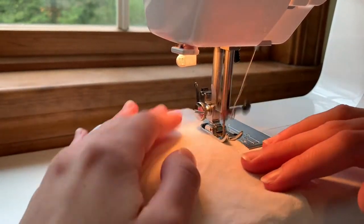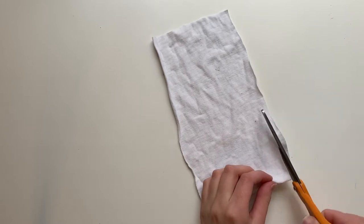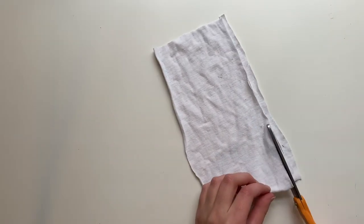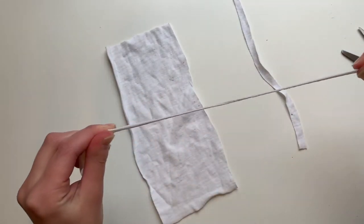I went back over the hem again to make sure it's strong. For the ties, cut 4 thin pieces of fabric. You should use a material that will stretch like this, like an old t-shirt.